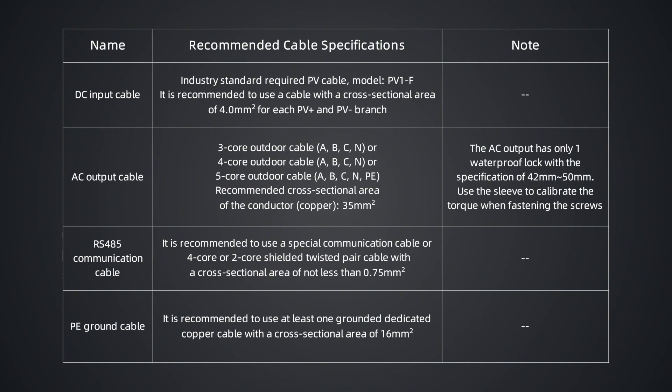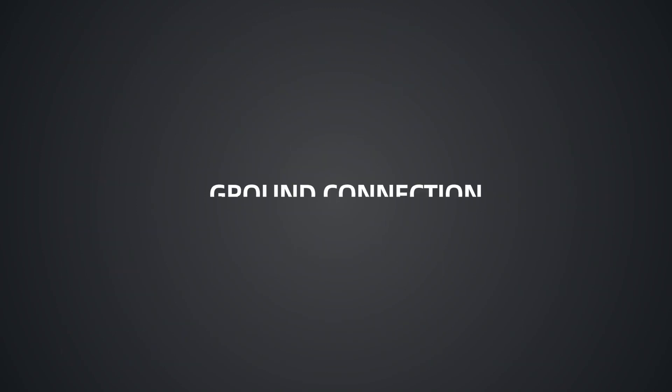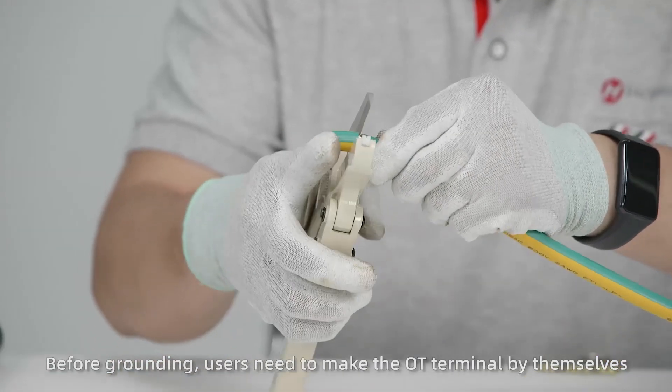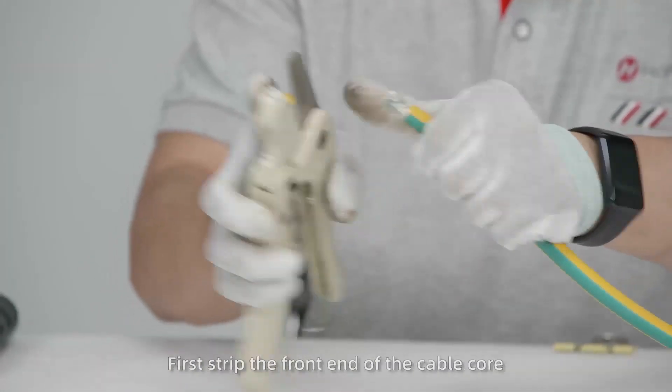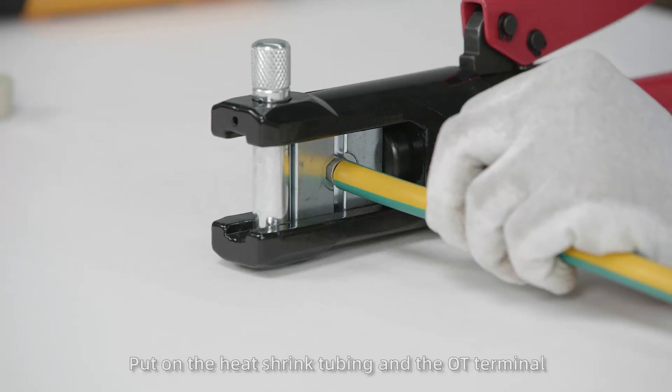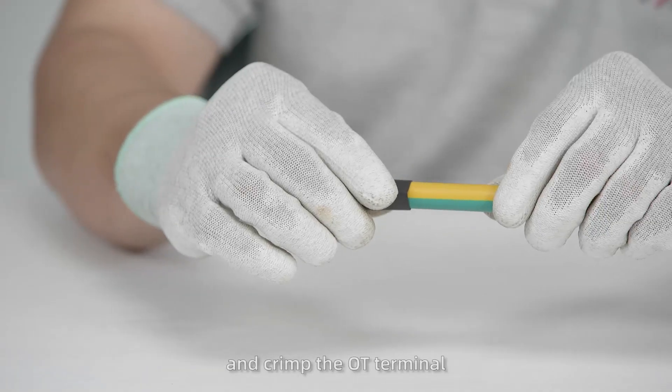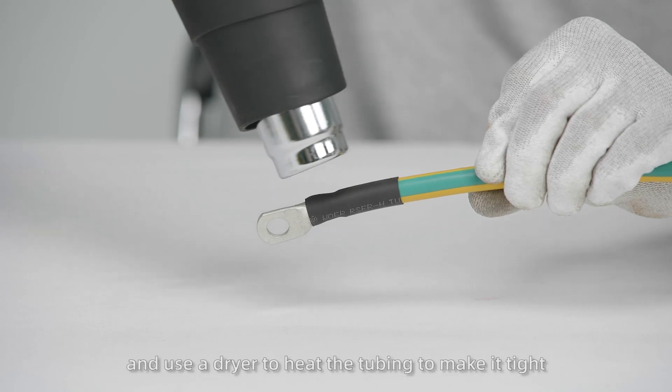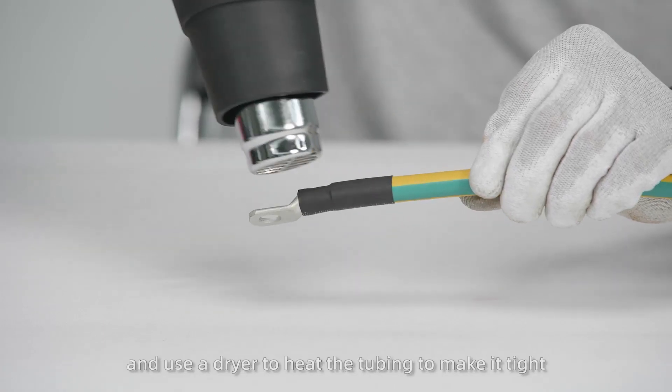Step 2. Cable Connection. First, connect the ground cable. Before grounding, users need to make the OT terminal by themselves. First strip the front end of the cable core, put on the heat shrink tubing and the OT terminal, and crimp the OT terminal. Then move the heat shrink tubing forward to cover the seam and use a dryer to heat the tubing to make it tight.